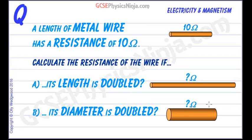A length of metal wire has a resistance of 10 ohms. Here it is. Calculate the resistance of the wire if its length is doubled or if its diameter is doubled.